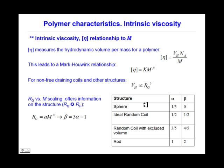Intrinsic viscosity can be related to the polymer mass by the Mark-Houwink relationship. The graph on the right shows information about the structure of the end product studied based on the Mark-Houwink relationship.